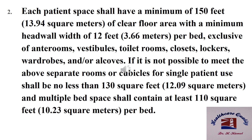Provision two: each patient space shall have a minimum of 14 square meters of clear floor area with a minimum head wall width of three and a half meters per bed, exclusive of ante-rooms, whirlpool pools, toilet rooms, closets, lockers, wardrobes, and/or alcoves. If it is not possible to meet the above, separate rooms or cubicles for single patient use shall be no less than 12 square meters, and multiple bed space shall contain at least 10 square meters per bed.